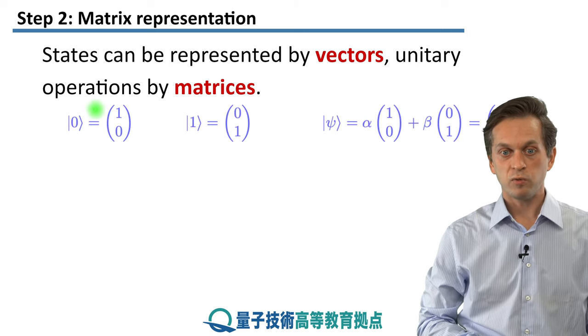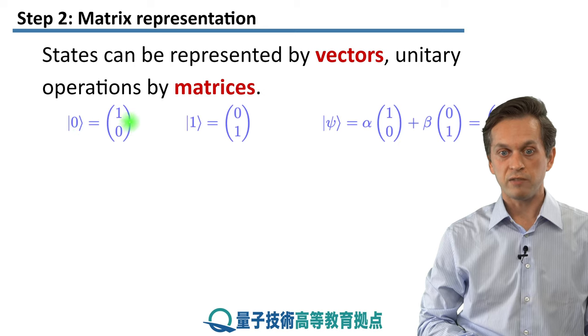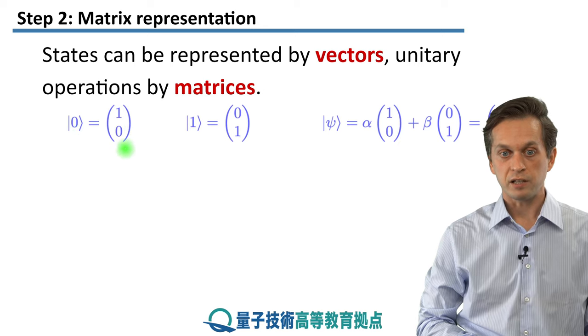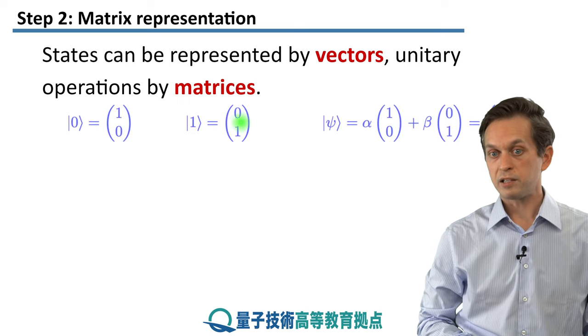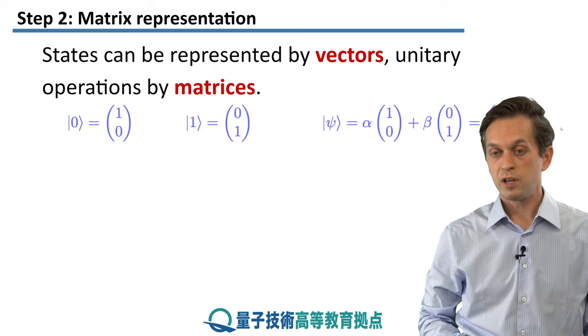First, let's begin with states. Usually, we denote a ket 0 in vector notation like this. It's a column vector 1 and 0. The ket 1, on the other hand, is a column vector of 0, 1.